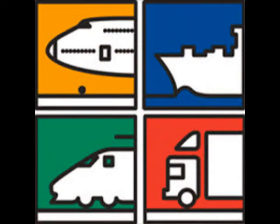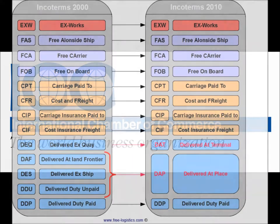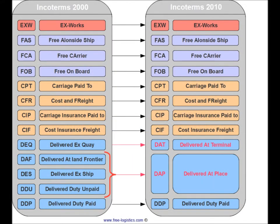Incoterms were created in 1936 by the ICC to facilitate international trade and understand trade terms. They have been updated 6 times, with final revisions in 2000 with 13 incoterms, and in 2010, leaving us with only 11 terms.